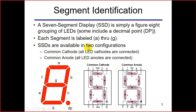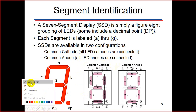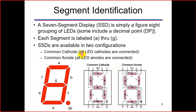Seven segment displays are available in two configurations. In the common cathode method, all LED cathodes are connected together. In the common anode method, all LED anodes are connected together. This is the common anode configuration, and this is the common cathode configuration.